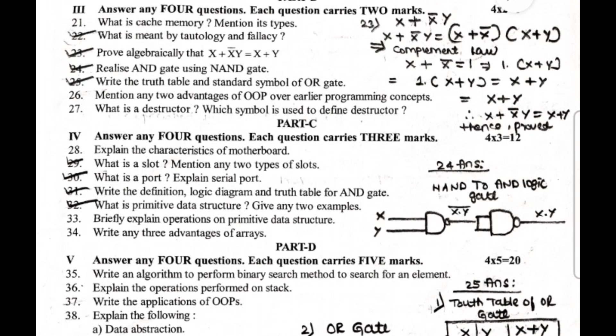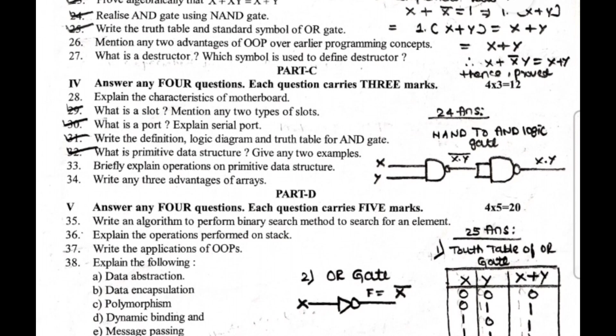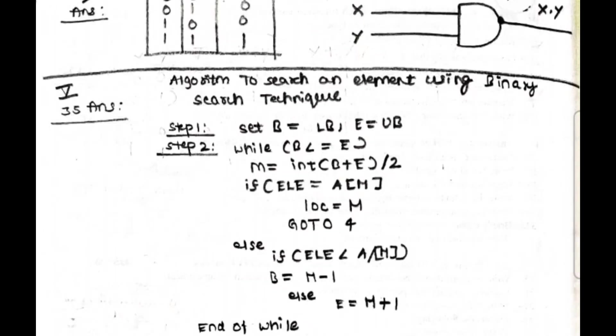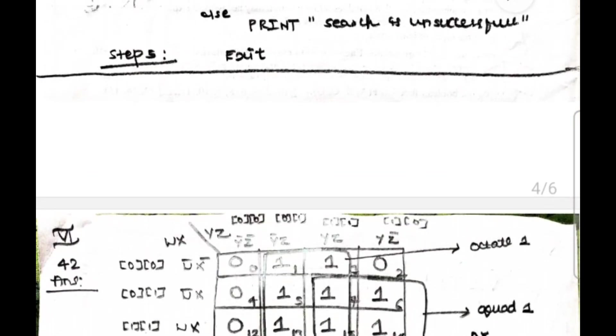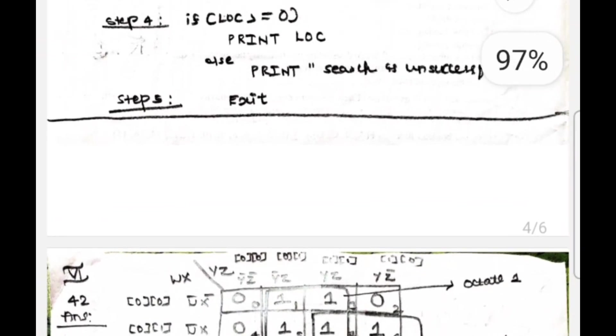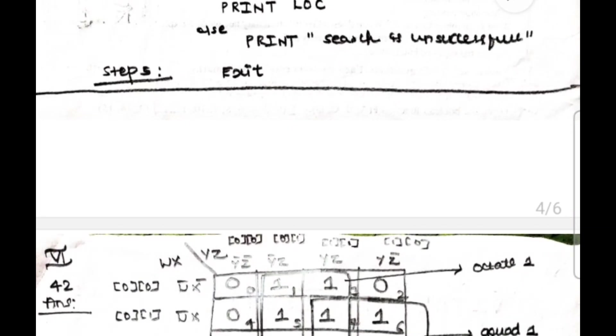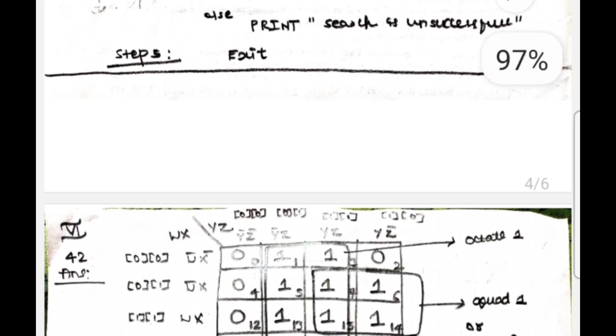The last part: answer any two questions, each question carries five marks. Using K-map, simplify the following expression in four variables W, X, Y and Z. The answer for the 42nd question is over here. This is the answer of the truth table. First you have octate from map rolling, you have octate, you have quad or two pairs. You can also make two pairs or you can also make quad one. Therefore, the final reduced SOP form is Z plus XY.